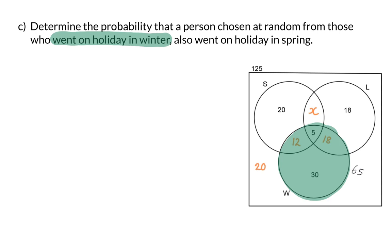Now they ask us that if we have a look at these 65 people, what is the probability that the person we choose also went on holiday in spring? So in this circle, if we focus on those who went on holiday in spring, you will see that there are 23 people. And that means that this probability is 23 out of the 65 people that already went on holiday in winter.